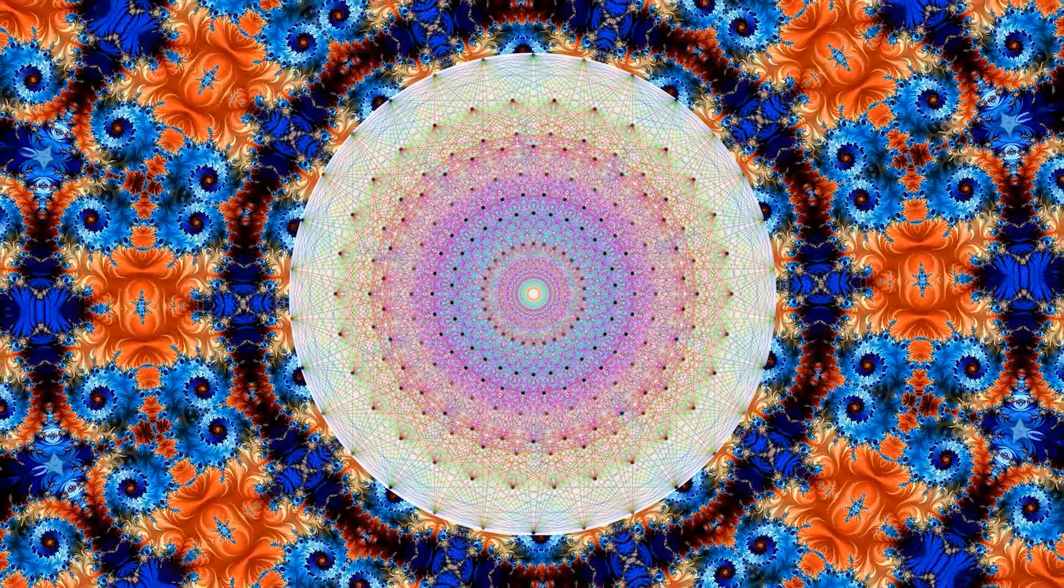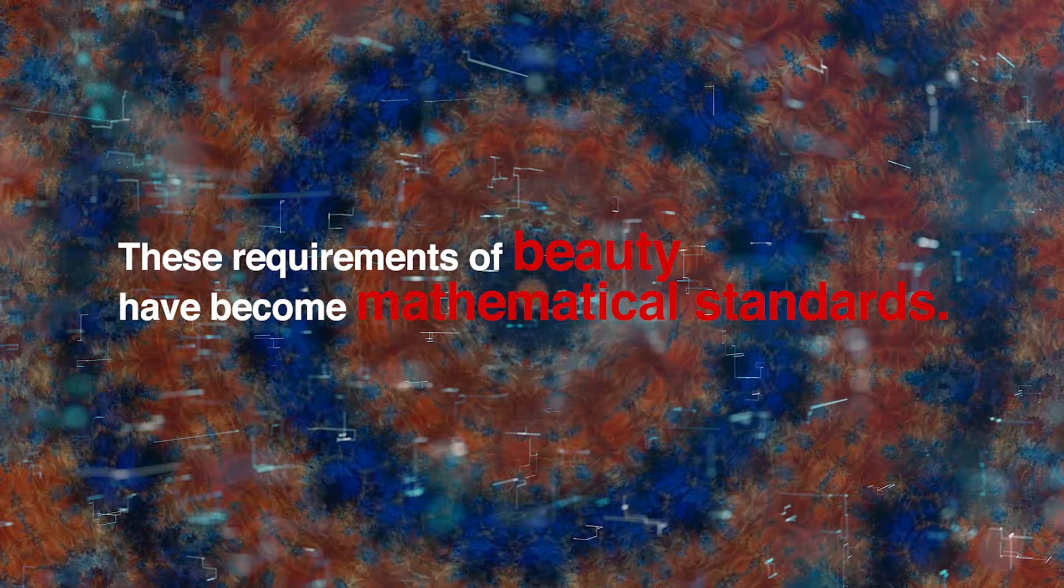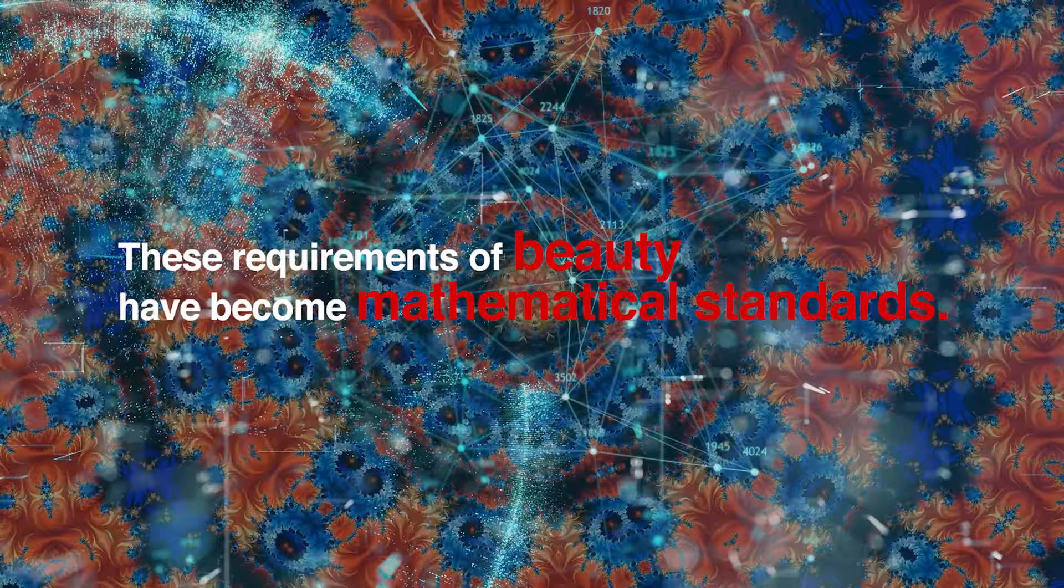Part of the problem is that they are largely unaware that this is what they are doing, because these requirements of beauty have become mathematical standards. So a lot of physicists will actually be really offended if you tell them that they rely on beauty, because they don't know that that's what they're doing. Ultimately, where these arguments come from, the reason why physicists would want nature to be in this particular way, is because it would be more beautiful.